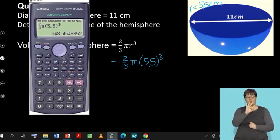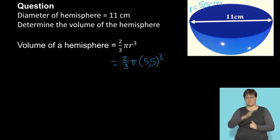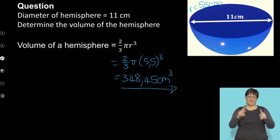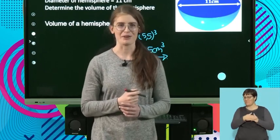We've got 2/3 multiplied by π times my radius cubed, which is going to give me 348.45, and this will be in terms of centimeters cubed, as it is volume. I hope that you're with me so far. After the break, we're going to look at some more examples. See you soon.